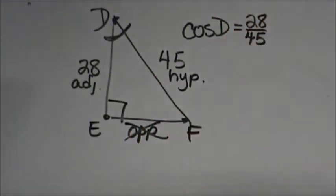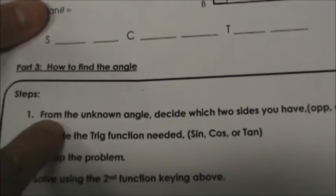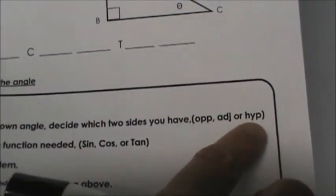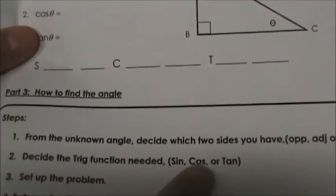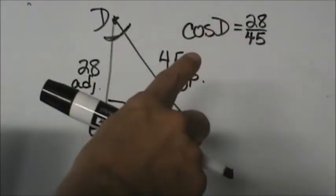There's my first two steps. Let's go back and reference. From the unknown angle, which was D, we need to decide which two sides we had. We had adjacent hypotenuse so we decided we were using the cosine function. Then we set it up. So here's our setup.